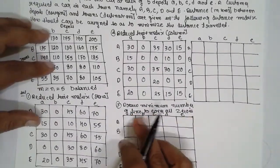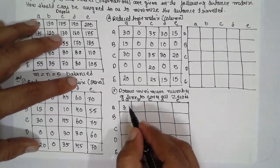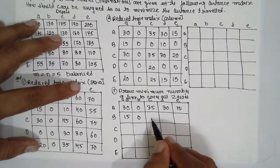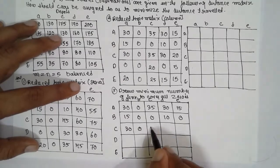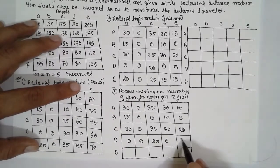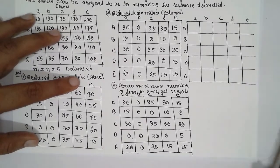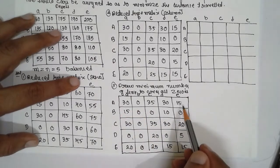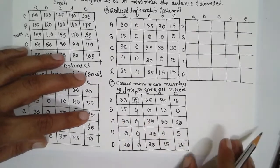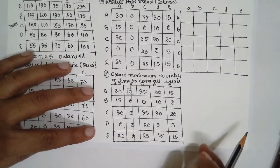Now draw the minimum number of lines to cover all the zeros. Construct one more box and write the reduced values into it. In the first row there is a single zero — assign it and eliminate the column. In row B there are two zeros — not possible to assign. In row C there is no zero. In row D there are two zeros — not possible. In row E there are no zeros. Now go column-wise: column 1 has a single zero — assign it and eliminate the row.